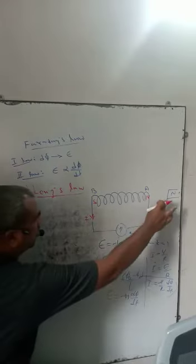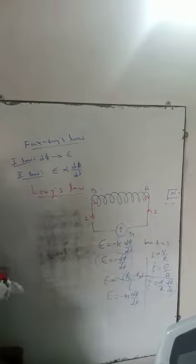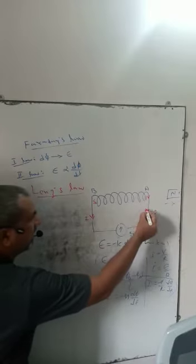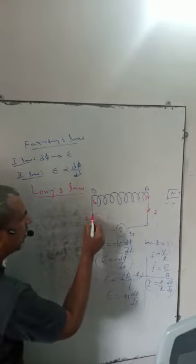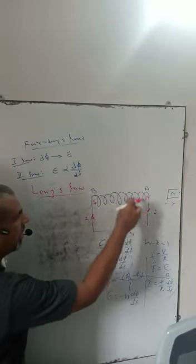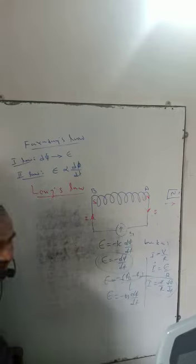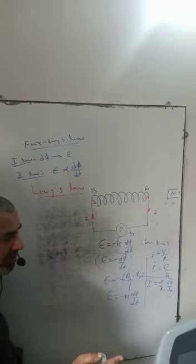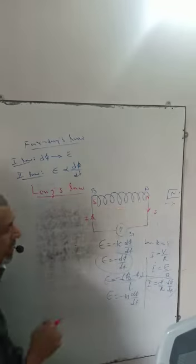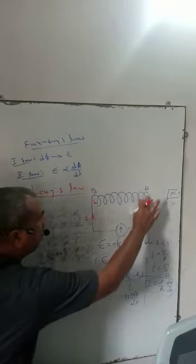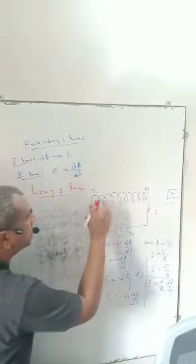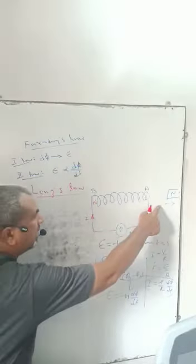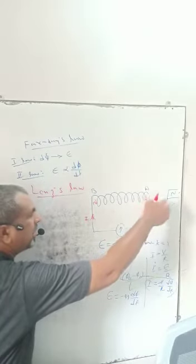If the magnet moves away from NA, due to decrease in magnetic flux, the current is induced in the coil in the clockwise direction. This coil behaves as a magnet, and the polarities will reverse: NA becomes the south pole and NB becomes the north pole. Since unlike poles attract each other, NA again opposes the magnet moving away from the coil.